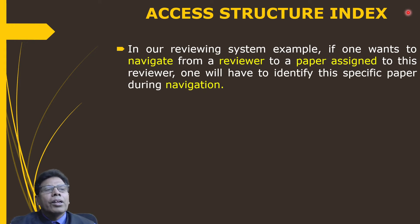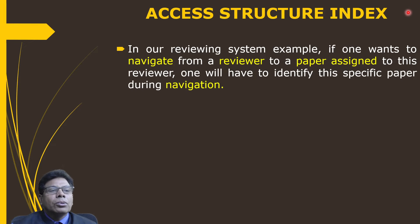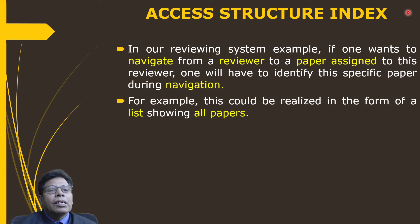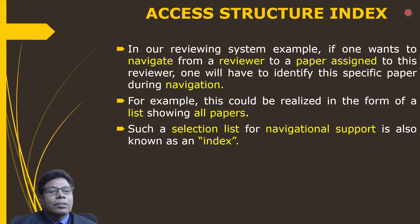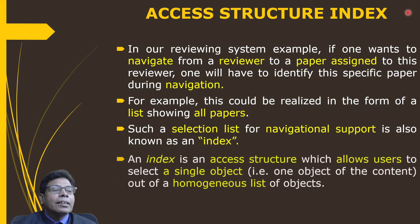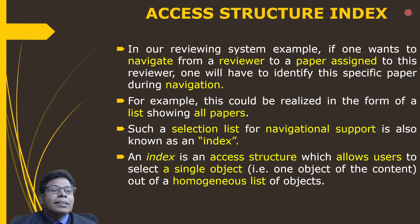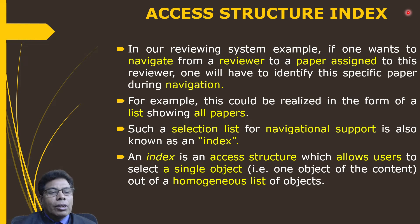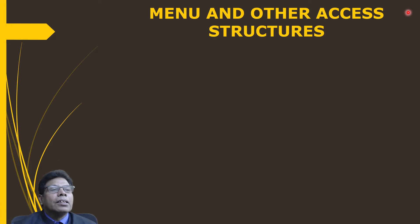Regarding access structure index: in our reviewing system example, if one wants to navigate from a reviewer to a paper assigned to that reviewer, one must identify the specific paper during navigation. This can be done in the form of a list showing all papers, from which a particular paper can be selected. Such a selection for navigational support is called an index — an access structure which allows users to select a single object out of a homogeneous list of objects.